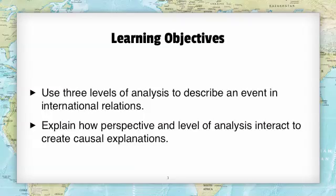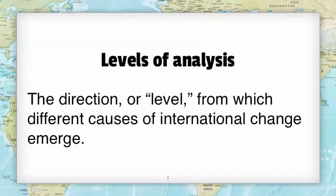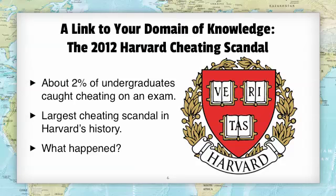In the end, you get many different explanations often either from the same perspective or from the same level of analysis, but they interact to create the multitude of competing explanations that we get in international relations. The first question I wanted to address is: what are levels of analysis to begin with? The textbook definition of levels of analysis is simply the idea that it is the direction or level from which different causes of international change emerge — the location, the unit of analysis where we are looking to determine what is going on. That is a very abstract idea, so I want to try to help you understand it by linking units of analysis to a domain of knowledge that most students should have by this point in their career.